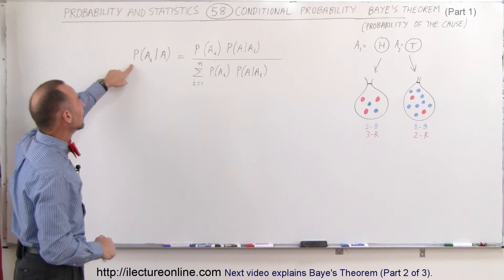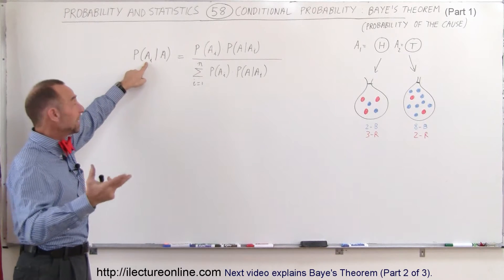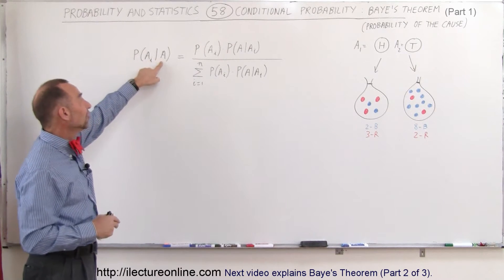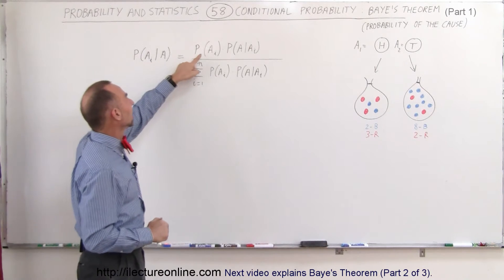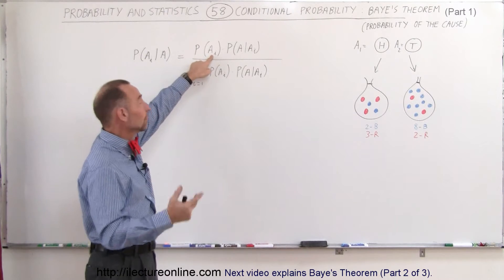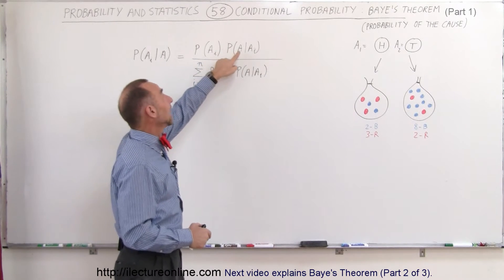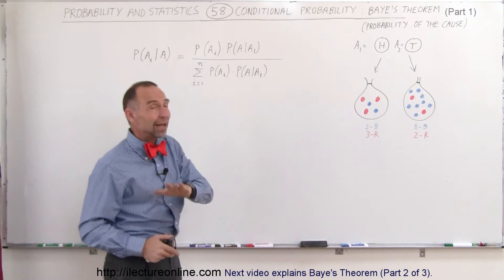So, here we have the probability that A sub i will occur, some independent event will occur, if we already know that A has occurred. Well, that is equal to the probability that A sub i will occur, some independent event, times the probability that A will occur, provided A sub i has occurred,